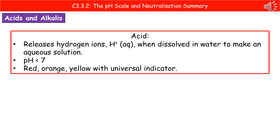Thinking about an acid first: what you'd have learned back in key stage 3, probably all the way back in year 7, is that acids have a pH of less than 7, and that if we add universal indicator to them, then they go red, orange, or yellow. To upgrade that slightly for GCSE, we need to know what it means in terms of hydrogen ions — an acid will release hydrogen ions when it's dissolved in water to make what's called an aqueous solution.